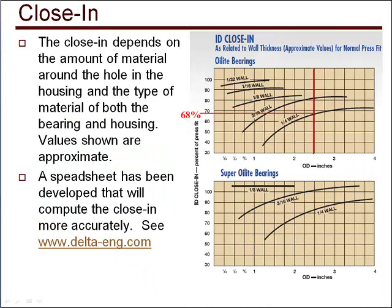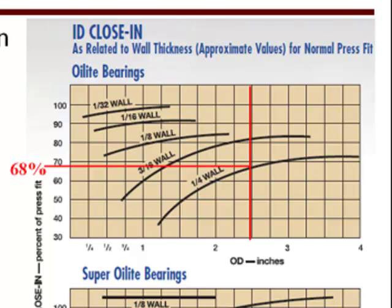A press fit is an interference fit — that is, the bearing OD is larger than the hole the bearing is assembled into. The material in the housing and the OD of the bearing are trying to occupy the same space. That can't physically happen, so the material in the housing is pushed out and the material in the bearing is squeezed in. Consequently, the ID of the bearing after assembly is smaller than before assembly. There are equations that can predict the amount of reduction in the ID of the bearing after assembly, and this is called close-in.